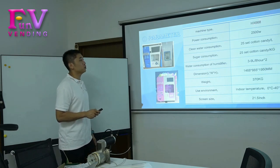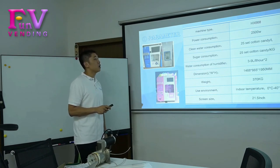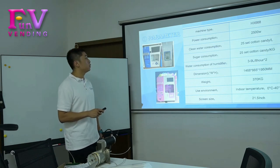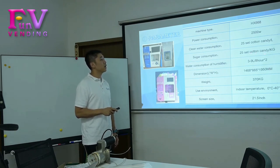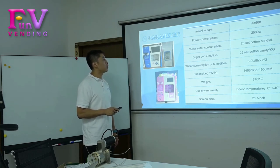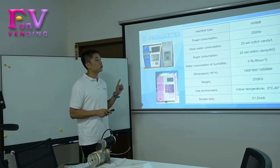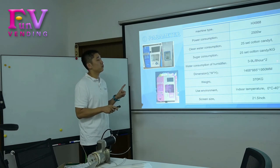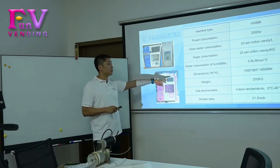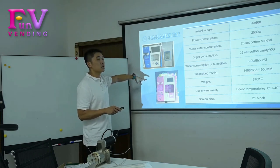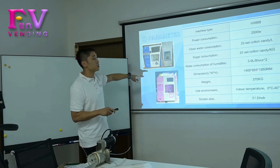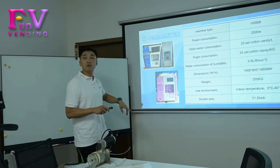The maximum power consumption is 2,500 watts. The candy output is approximately 20 sets of candy cotton per hour. The sugar consumption is 25 sets of candy cotton per kilogram. The water consumption covers 3 to 9 hours with 2 tanks, as we have two tanks on this machine. The dimensions of this machine are 1,468mm × 665mm × 1,950mm.